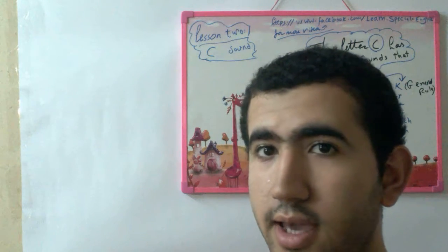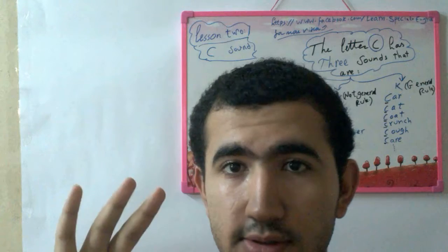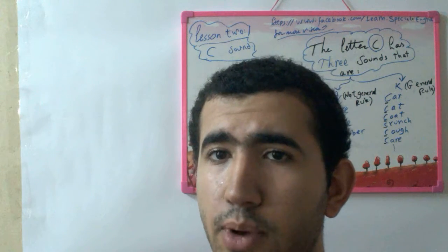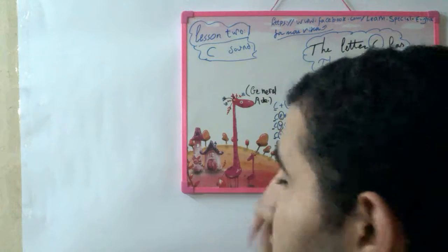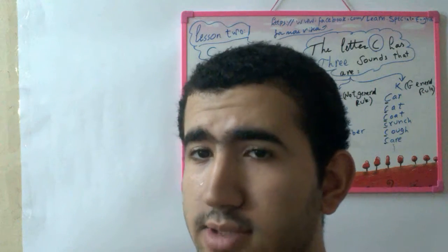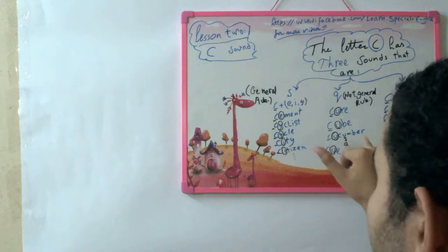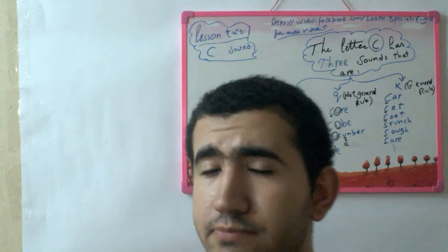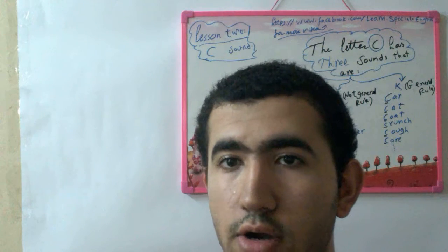So that's for the C letter. What we have learned today: the C letter has three sounds — S, Q, and K. It is S when it's followed by E, I, or Y, like cement and cyclist. It is Q when it's followed by U, but that's not a general rule — sometimes it's Q and sometimes it's K, like in cucumber. The K pronunciation is a general rule, so we can say cat, car, coat, and so on.